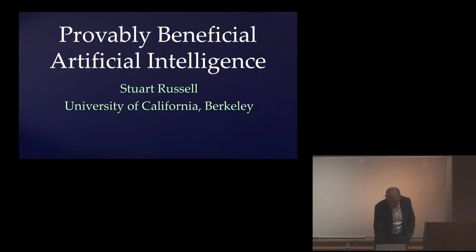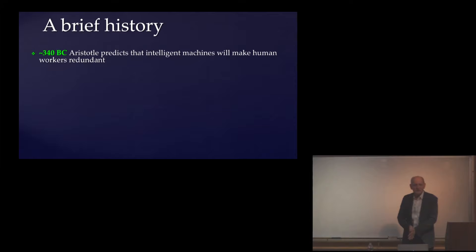Let me provide a little bit of history. There's a lot of stuff in the news these days about the potential upsides and downsides of AI, but actually it's been going on longer. In around 340 BC, Aristotle was writing about the possible consequences of intelligent automation on employment.